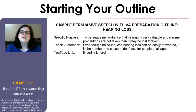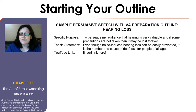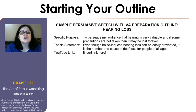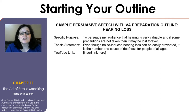There are a few things you want to do to start your actual outline. The first is to list your specific purpose. This is your specific purpose statement, and the reason it's there is to ensure that everything you do during the course of your outline supports your specific purpose. In this example, the specific purpose statement is in a speech on hearing loss, and it's to persuade my audience that hearing is very valuable and if some precautions are not taken then it may be lost forever.